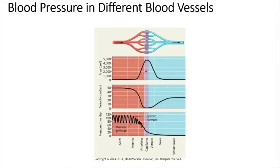Cross-sectional area, or total cross-sectional area, and blood flow velocity are inversely related. When the total cross-sectional area is low, blood flow velocity is high. When the diameter of blood vessels decreases, the resistance increases and blood flow velocity also decreases.